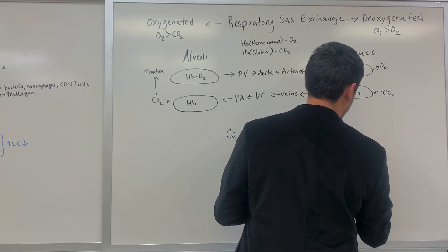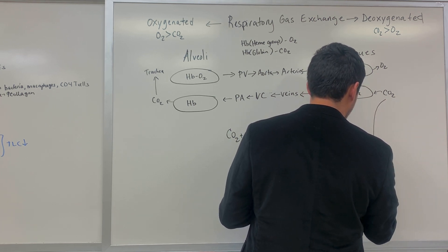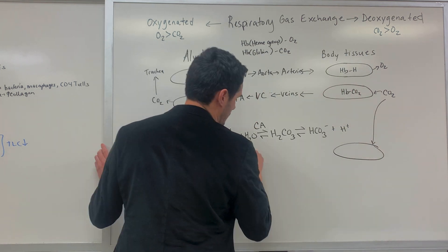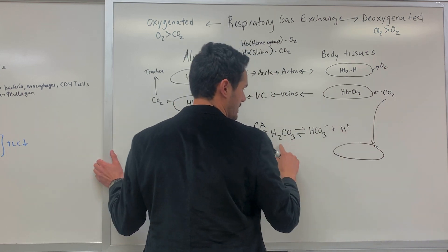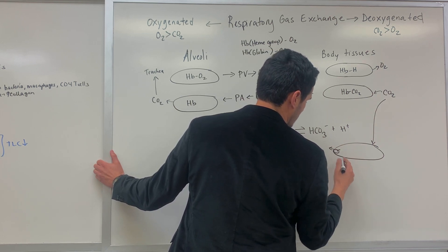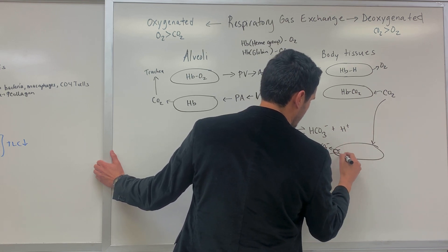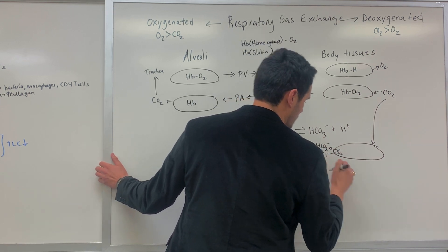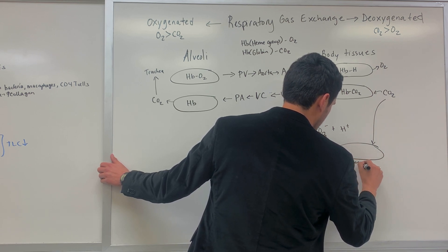I'll draw another red blood cell here. When carbon dioxide enters the red blood cell, it pushes the equation forward. Once it gets converted, the bicarbonate will leave the red blood cell and the chloride ion will then enter — this is known as an ion exchange transporter, also called the chloride shift.